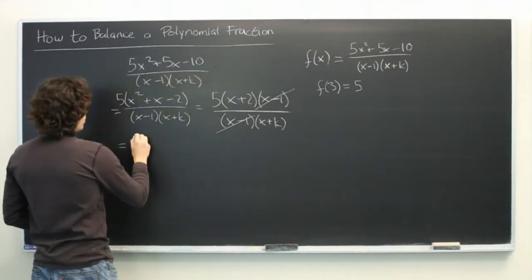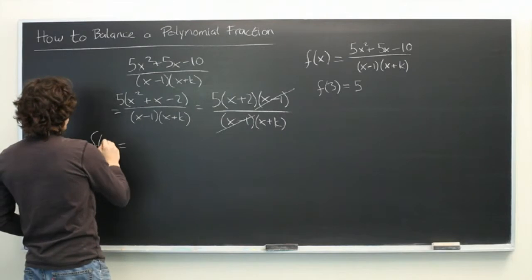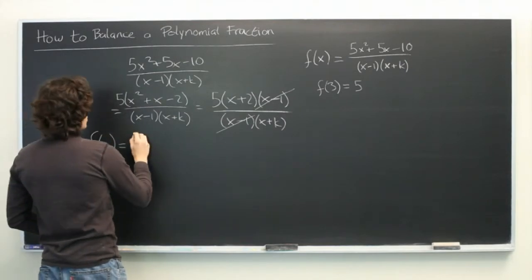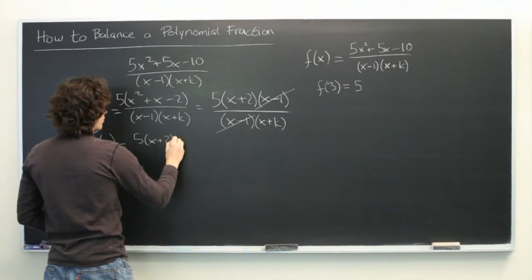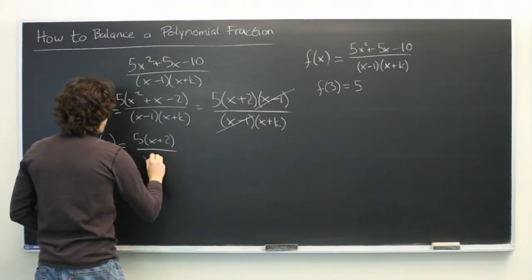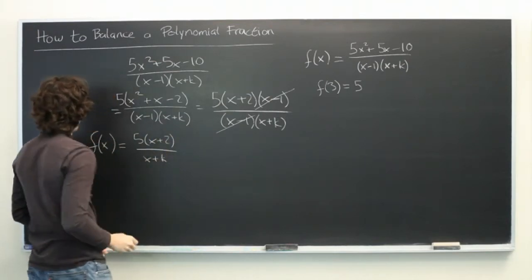So what that leaves us with is that f(x) is equal to 5 times (x plus 2) over (x plus k). Great, it's much easier to work with.